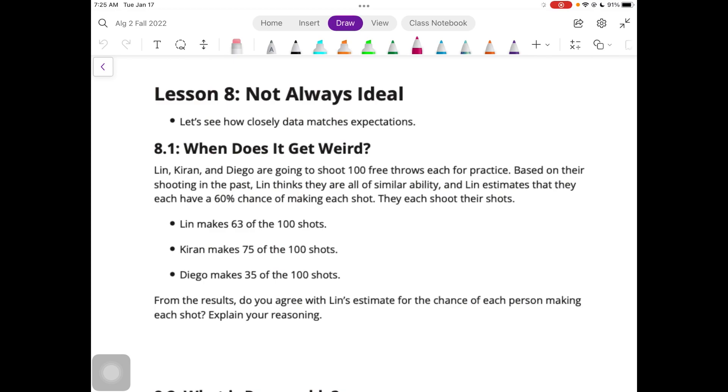Because she did say based on their shooting in the past. But you could also say that no, you don't agree with her estimate. Because she was pretty close on her own, but Kieran and Diego were kind of far off. So it would be helpful to get more samples, have them do 100 more shots, or maybe 100 shots each day, and take all that data to see if the 60% chance is actually accurate or not.